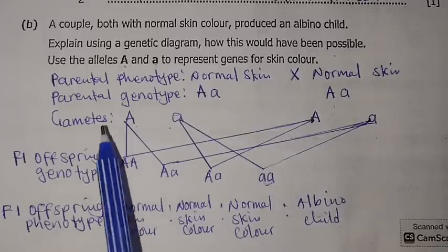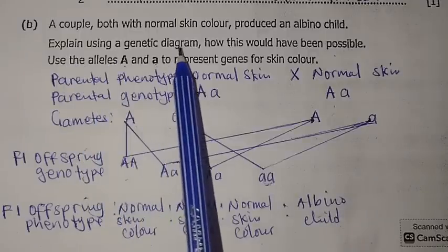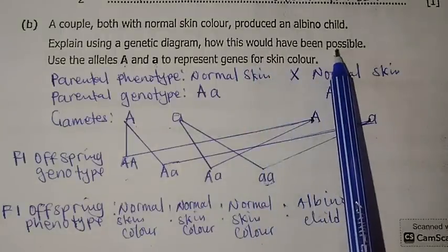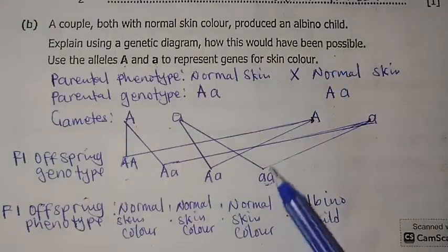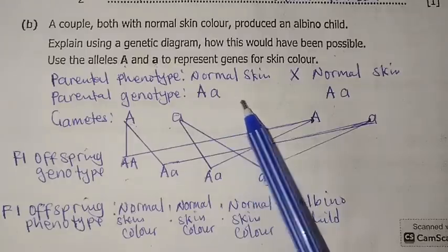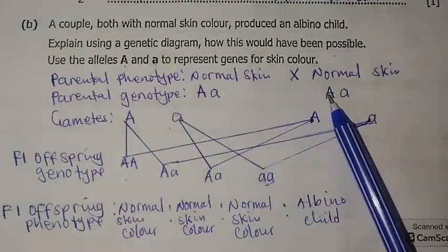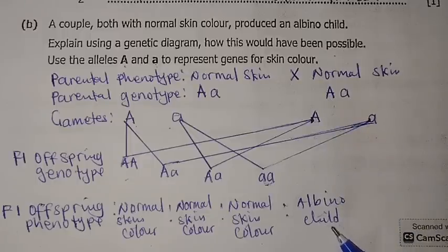So it would have been possible for this couple to have an albino child because both parents were heterozygous. Indeed, they produced an albino child. We've come to the end of our session. Thank you so much everybody for having time to view this content. This has been your presenter, Mr. Mrenga. Bye-bye.